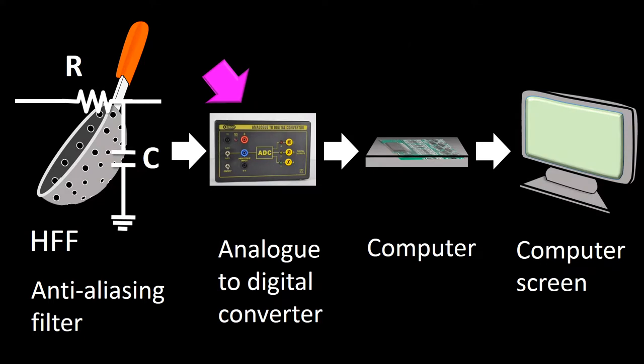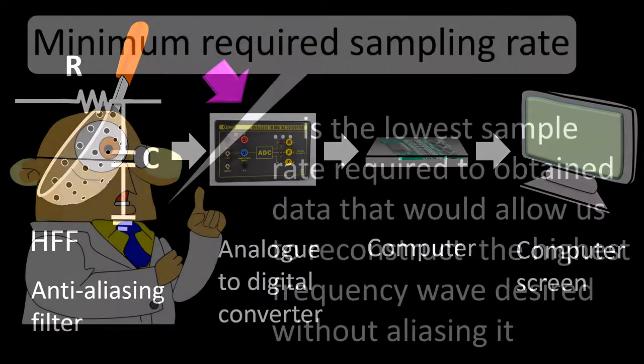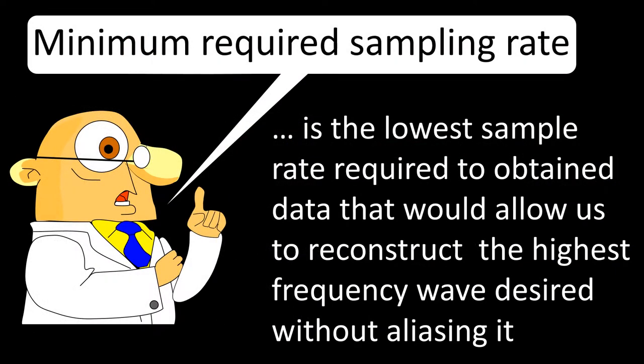The sampling rate is a function of the analog-to-digital converter. The minimum required sampling rate consists of the lowest sampling rate required to gather enough data to reconstruct the highest frequency present in a wave without aliasing it. From the clinical point of view, it is the lowest sampling rate required to accurately reconstruct the highest frequency wave that we desire to see.